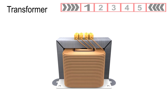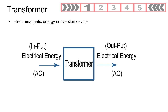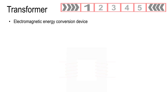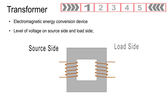A transformer is an electromagnetic energy conversion device which transforms electrical energy from one alternating current circuit to another without a change in frequency. Depending upon the level of voltage on both sides of a transformer, i.e. source side and load side, it can be of two types.